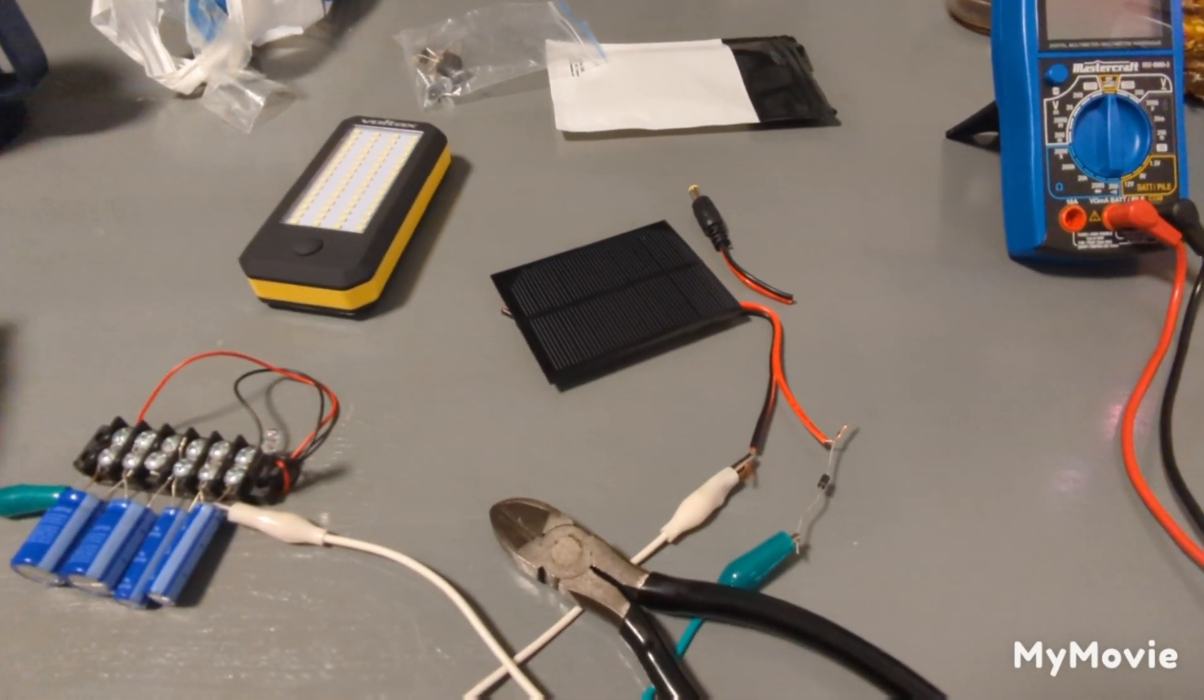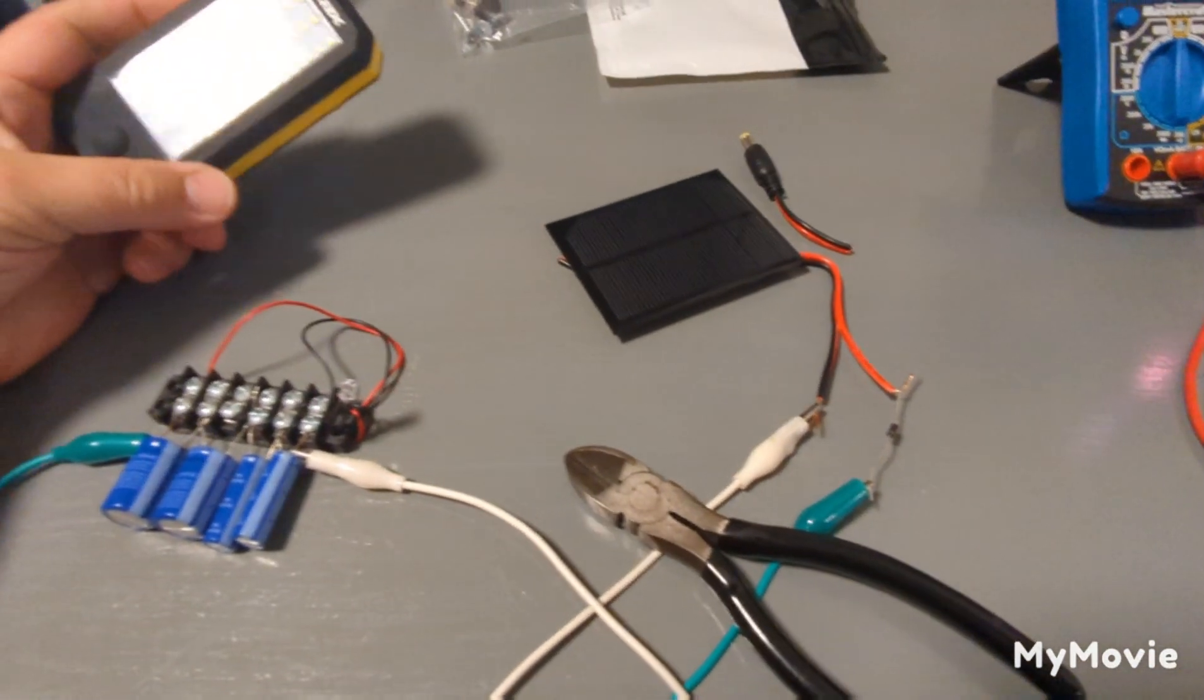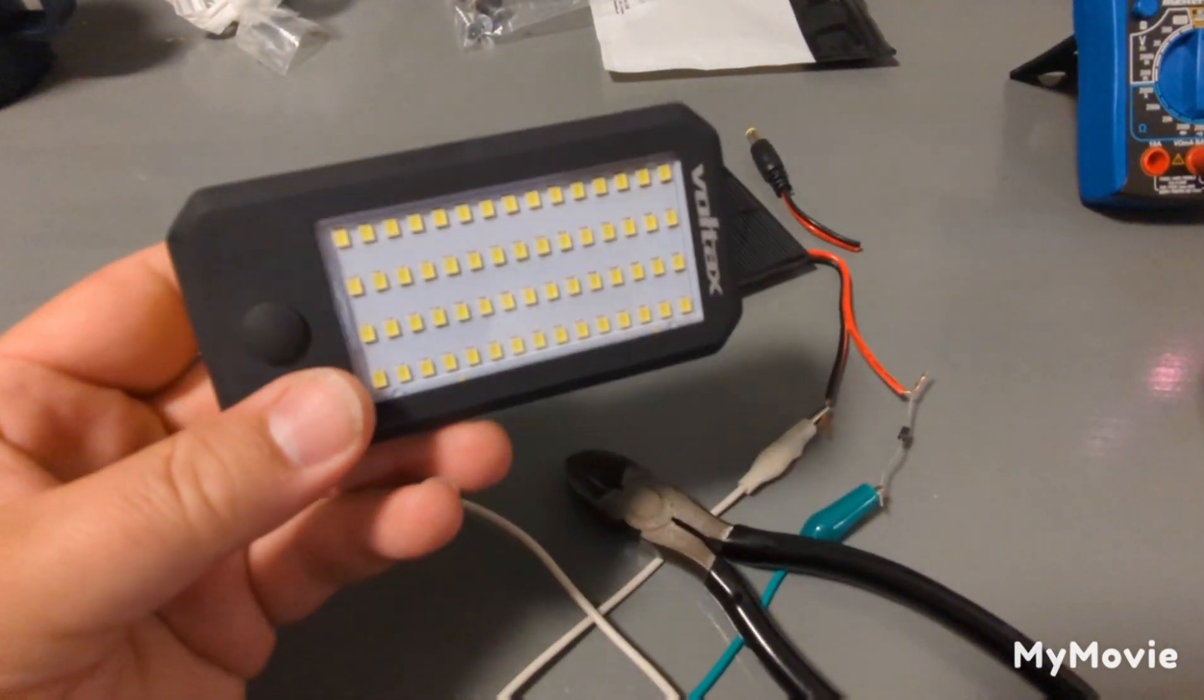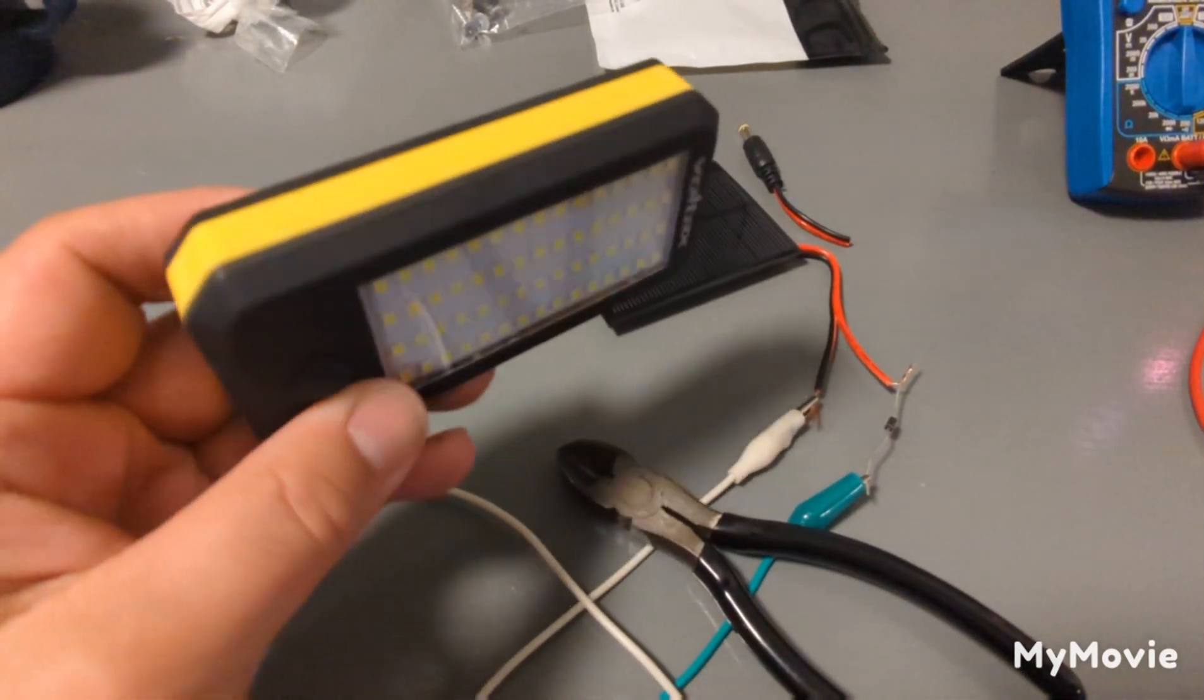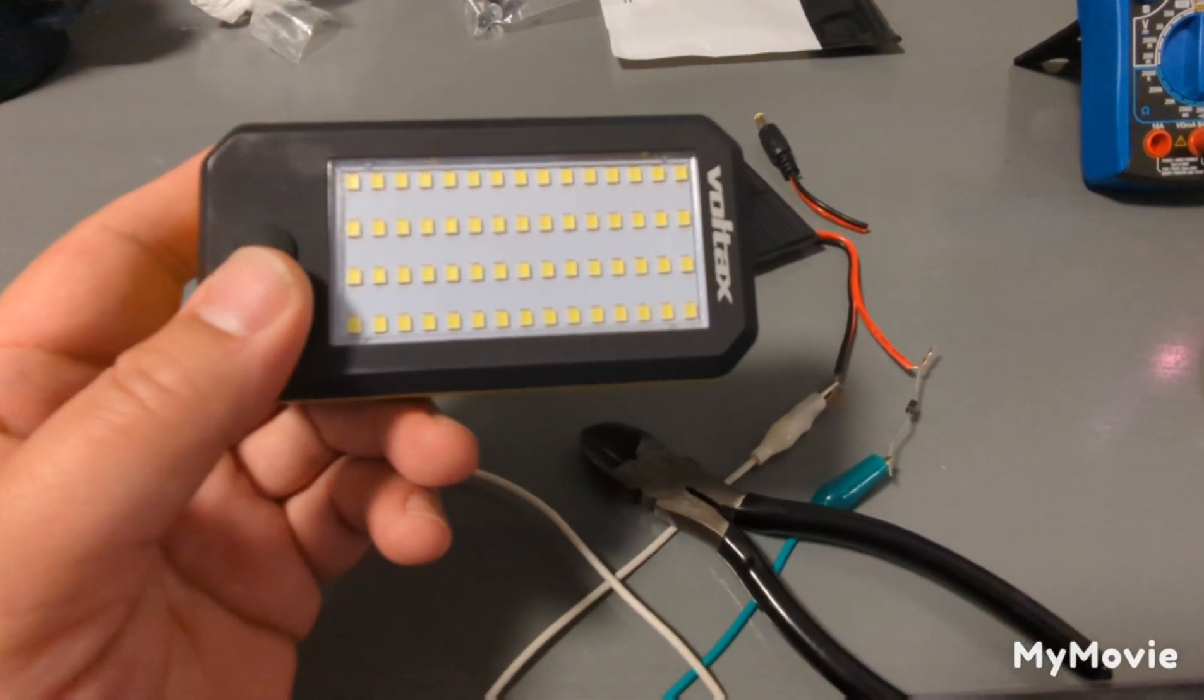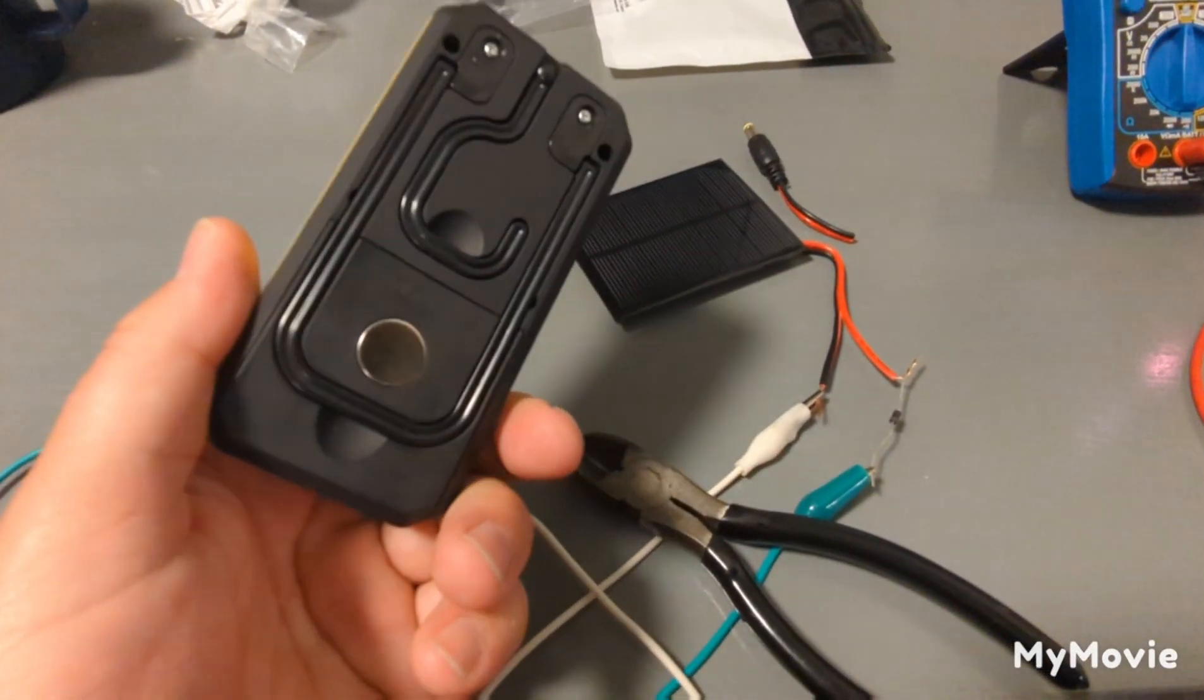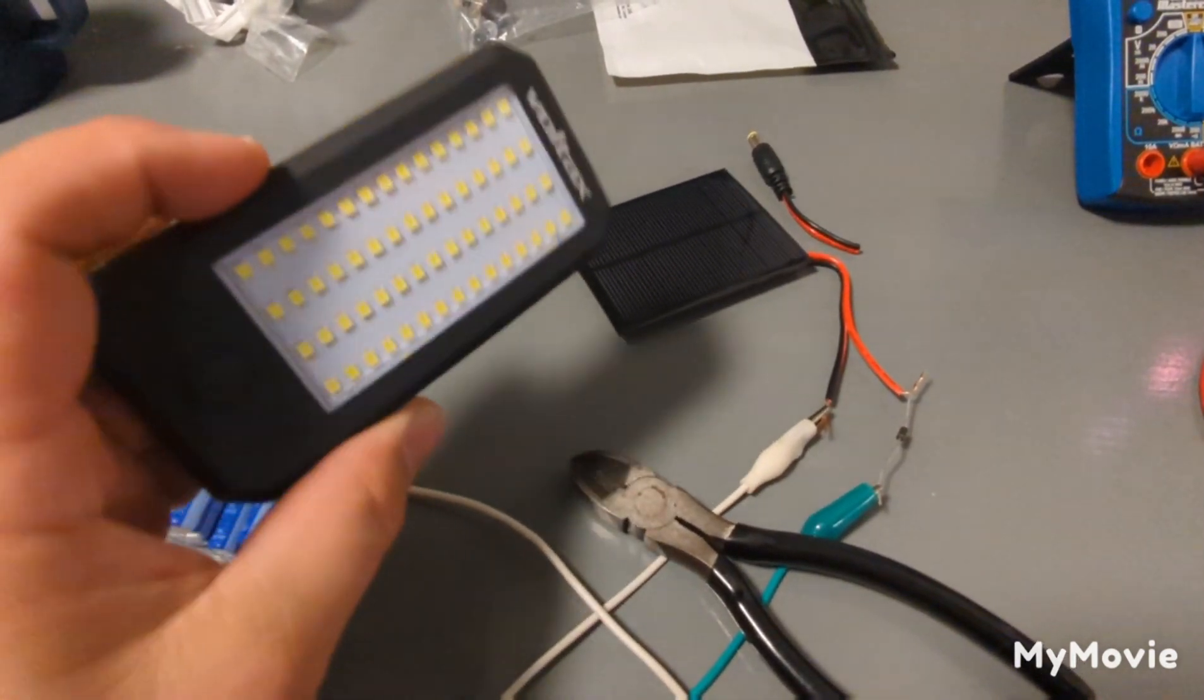I just had to do a little solar experiment. My wife went to the dollar store and she picked up one of these little LED emergency lights. It turns out this little thing can put out 900 lumens of light power.